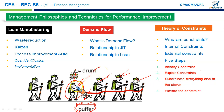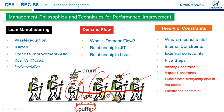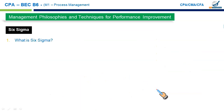Fourth, elevate the constraint — for example, replace the bottleneck resource with one capable of moving faster. Fifth, once you resolve this constraint, another will emerge, so this process requires regular revision. It is a continuously updated process, because removing one constraint will cause another to pop up.